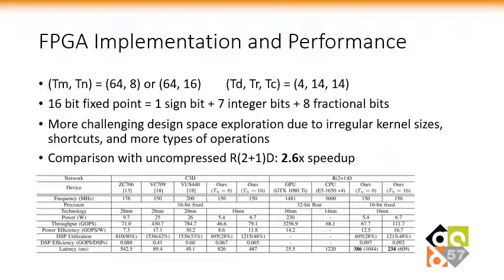The tiling parameters tm and tn are the same as for weight blocks. For the feature dimensions, namely depth, height, and width, the tiling sizes are respectively 4, 14, and 14. The data format is 16-bit fixed point including a sign bit, 7 integer bits, and 8 fractional bits. Note that the design space is more challenging for R2+1D due to more irregular kernel sizes, shortcuts, and more types of operations. Compared to the uncompressed R2+1D model, our pruned model achieves a speedup of 2.6×.